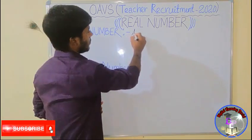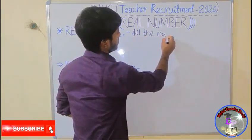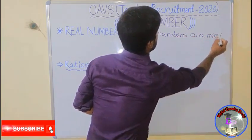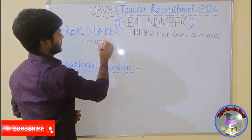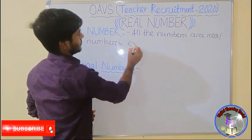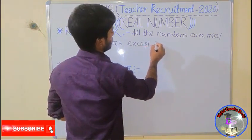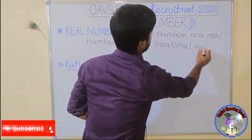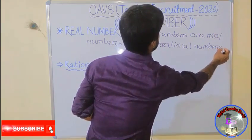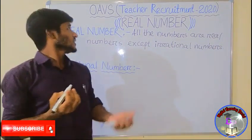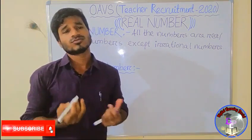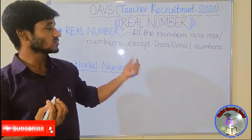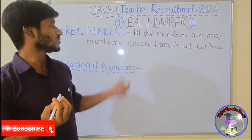Now, all the numbers are real numbers, except the irrational numbers. What is the real number? If we are trying to define the real number, that means all the numbers are real numbers except the irrational numbers.